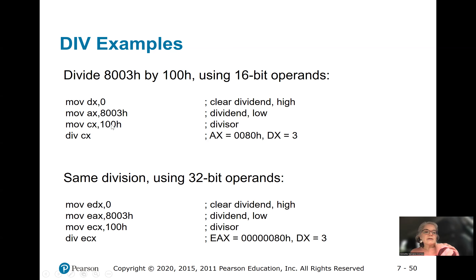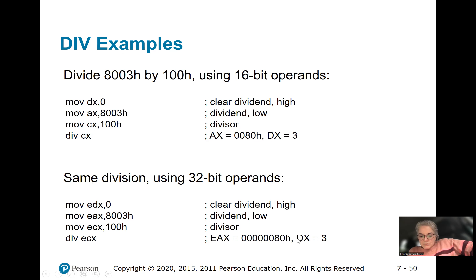Then we divide by 100. We divide AX by CX and the answer goes into AX — the quotient is 80. So 8003 divided by 100 gives 80 with a remainder of 3. The remainder goes into DX. We do the same thing with 32-bit operands, except the remainder actually goes into EDX, and EAX contains the quotient.